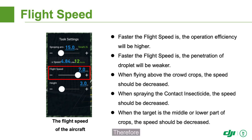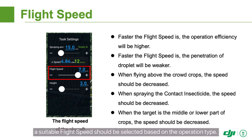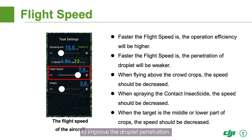Therefore, a suitable flight speed should be selected based on the operation type. Dense crops and contact pesticides require a lower flight speed to improve droplet penetration.